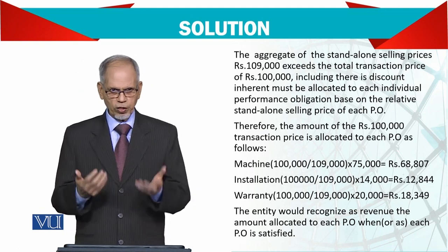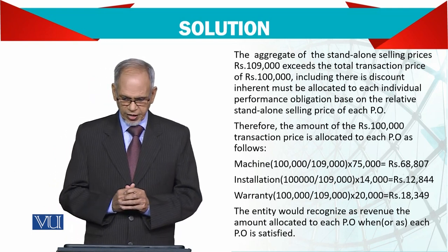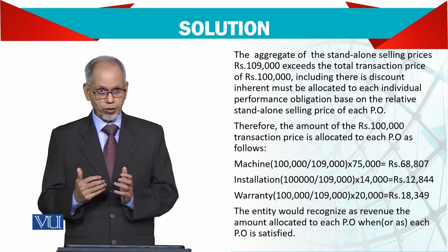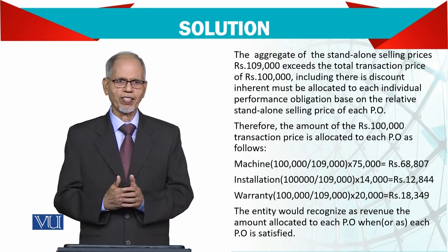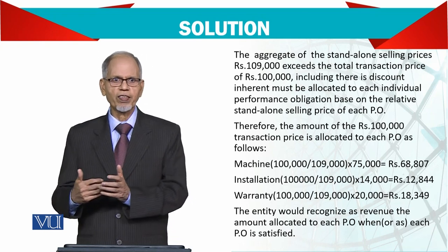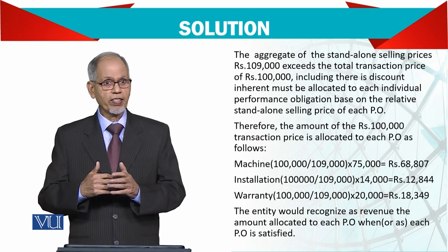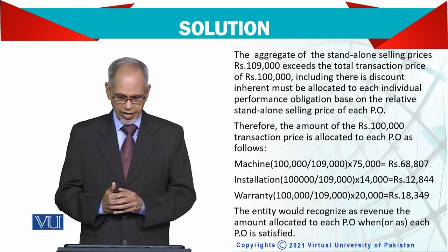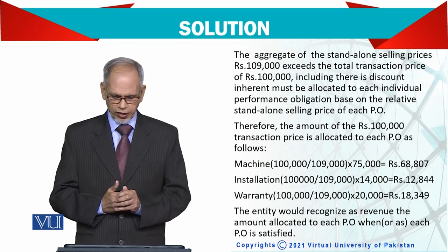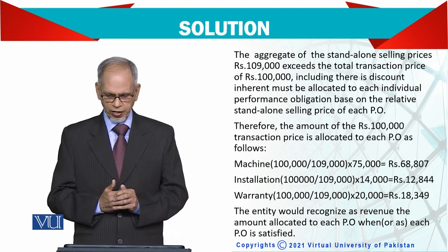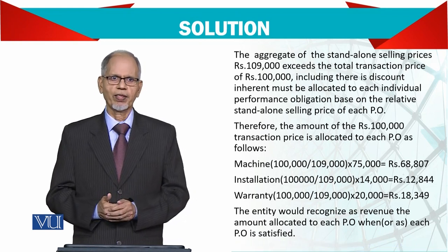For the warranty, since it runs over two years, you cannot record it all at once. You have to wait and recognize revenue over the warranty period — perhaps 50% in the first year and 50% in the second year, or at the expiry of two years. The amount allocated to each performance obligation is recognized as revenue when and as that performance obligation is satisfied.